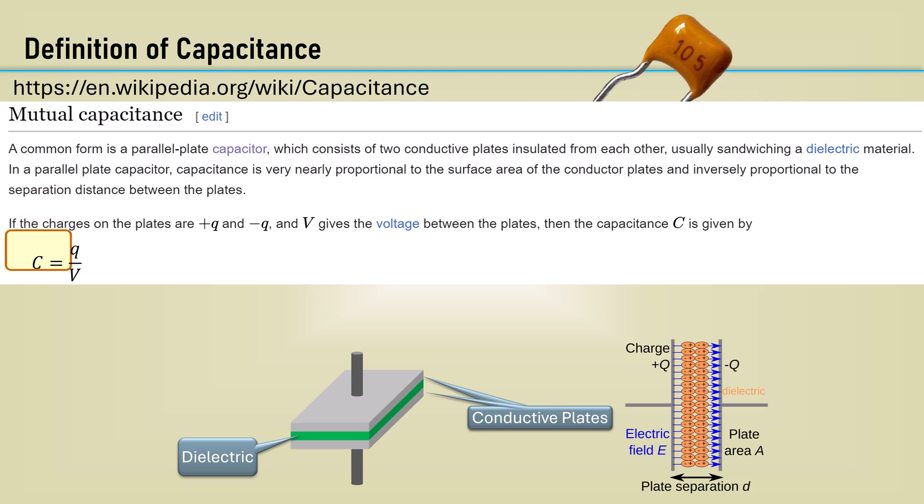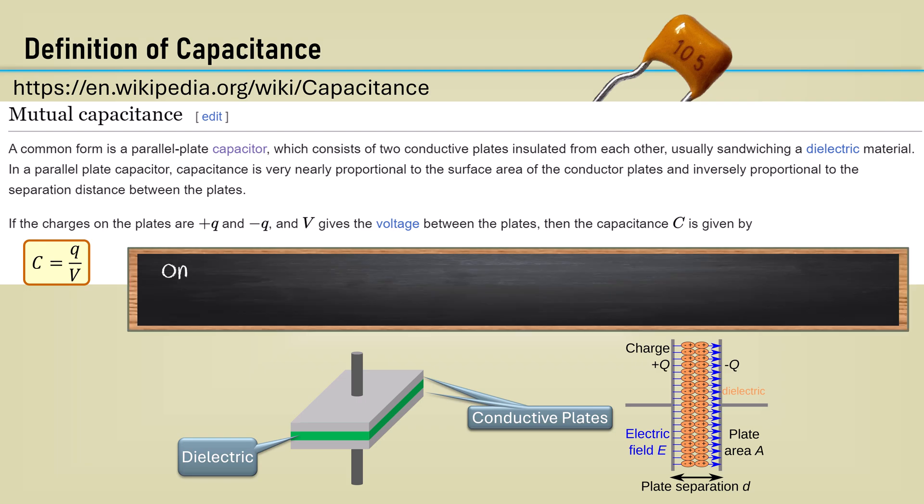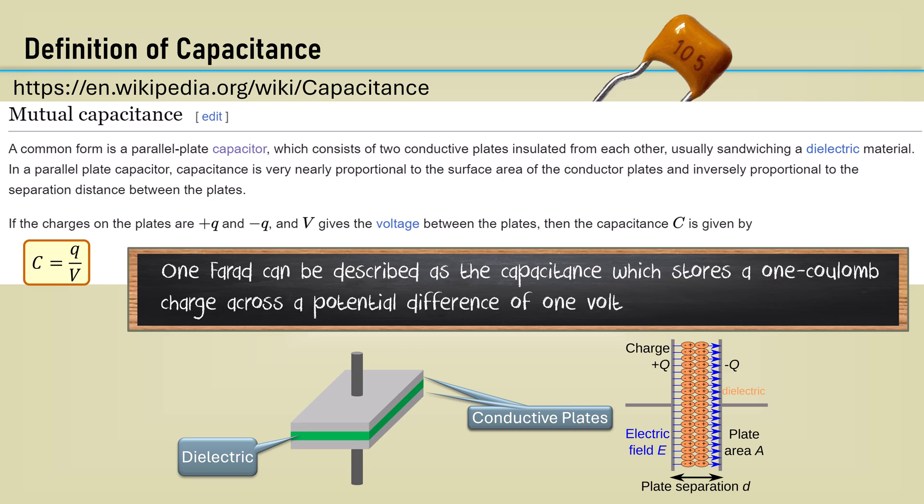The capacitance C is equal to the charge Q over the voltage across it V. One farad can be described as the capacitance which stores one coulomb charge across a potential difference of one volt. Therefore, one farad is equal to one coulomb of charge over one volt.